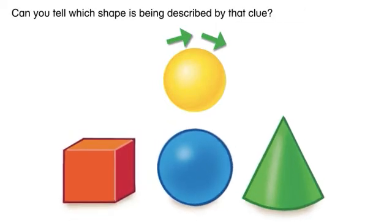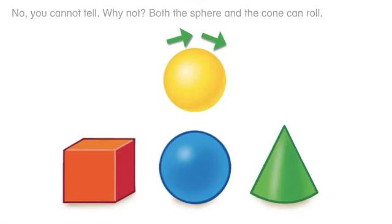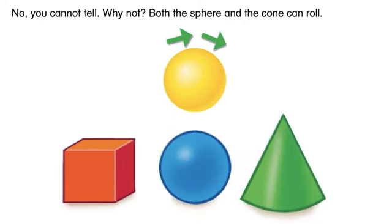Can you tell which shape is being described by that clue? No, you cannot tell. Why not? Both the sphere and the cone can roll.